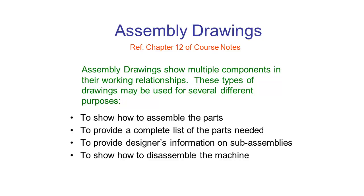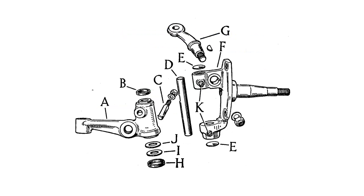Another use for assembly drawings is to show how to disassemble a machine. This is something you might find in a handbook or guide for working on your car, and these are also similar to what you might find in Lego kits. They're designed to be looked at by people who are not engineers and do not know how to read orthogonal and detailed drawings. So they're generally quick and easy to look at, showing how things go together, though producing them would generally require quite a bit of work.